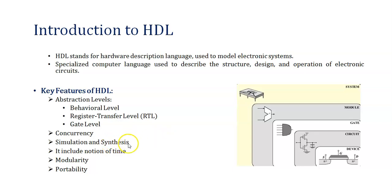Synthesis is converting your high-level code into a gate-level netlist. HDL is used for automatically generating the physical implementation of the circuit, which is used in fabrication. The next key feature includes the notion of time — time is a very crucial part in simulating a digital circuit. In HDL you can provide delay constructs, clock, and timing so you can add timing information in your code, just like actual hardware where gate delays occur. You can add that using constructs such as delay, clock, and timing control statements.